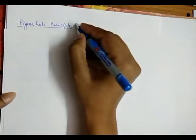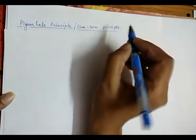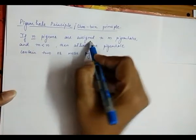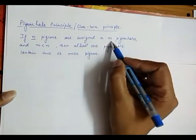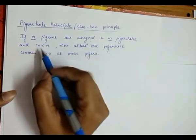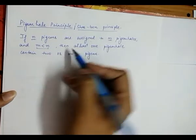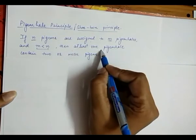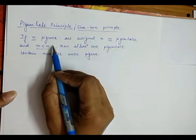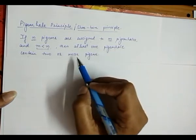This principle is also known as the shoebox principle. The pigeonhole principle says that if n pigeons are assigned to m pigeonholes, where m is less than n — meaning the number of pigeonholes is less than the number of pigeons — then at least one pigeonhole must contain two or more pigeons.